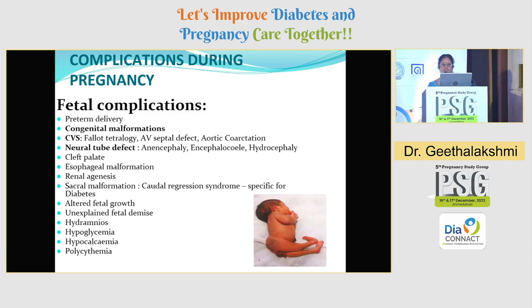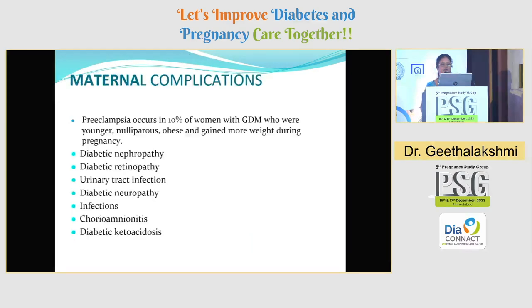The fetal complications include preterm delivery, congenital malformations, cardiovascular and neural tube defects. As far as maternal complications are concerned, preeclampsia occurs in 10% of women with GDM who are younger, nulliparous, obese, and gain more weight during pregnancy. Other complications include diabetic nephropathy, neuropathy, retinopathy, urinary tract infections, chorioamnionitis, and diabetic ketoacidosis.